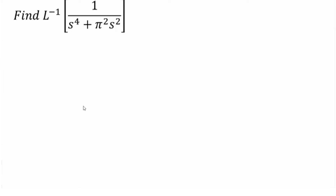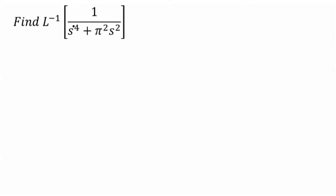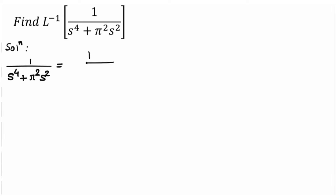So let's see how to solve this example. To solve this Laplace inverse, we first separate the term using the partial fraction method. Our term is 1 upon s to the power 4 plus pi squared s squared. From the denominator, if we take s squared common, it remains s squared plus pi squared.